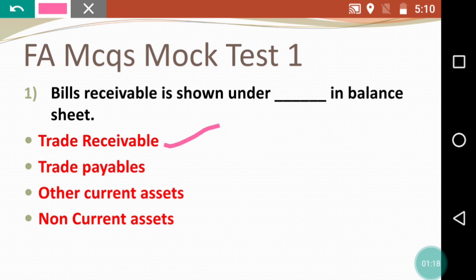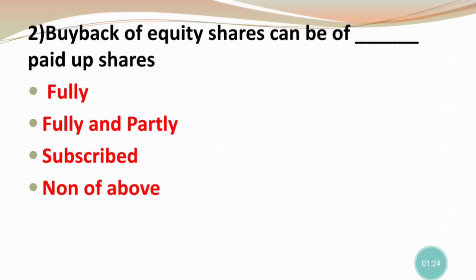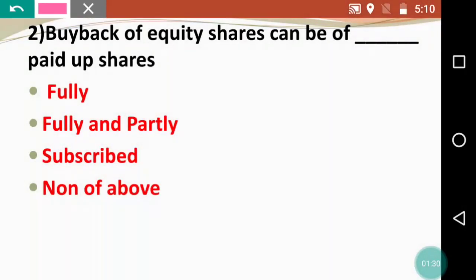Next question: Buyback of equity shares can be done of dash paid-up shares. The options are fully paid-up shares, fully and partly, subscribed, and none of the above. The correct answer is fully paid-up shares — buyback of equity shares can only be done of fully paid-up shares.